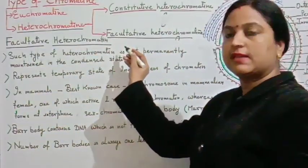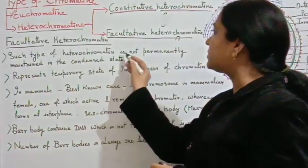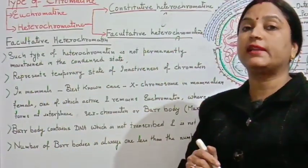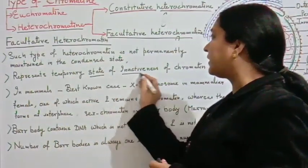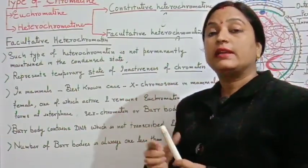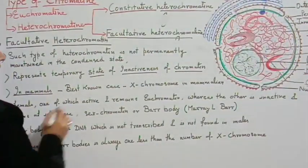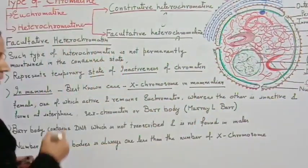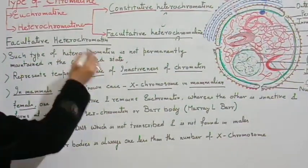Now we study facultative heterochromatin. This type of heterochromatin is not permanently maintained in the condensed state. It represents a temporary state of inactiveness of chromatin. The best known example in mammals is the X chromosome in mammalian females — one X chromosome is active and the other remains inactive as facultative heterochromatin.